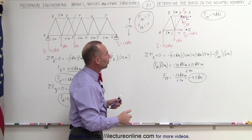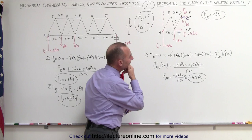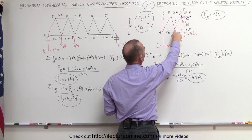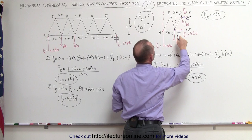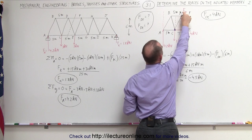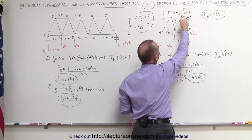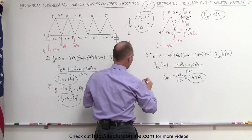Now we only have one left: the force between D and E. Notice that member is at an angle. What we probably want to do is put a pivot point here — that would be a good place. Why? It eliminates those two forces. It gives us the force FDF, which we've now figured out, and the only remaining unknown is FDE. So the sum of all the moments about point C is equal to zero.